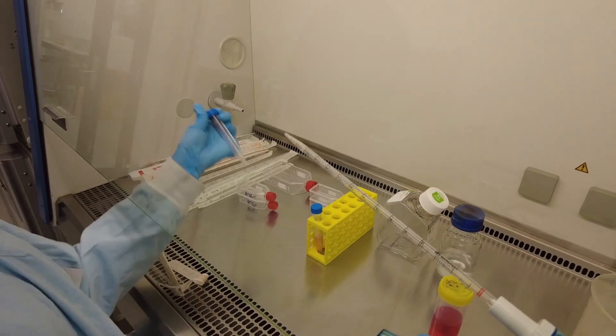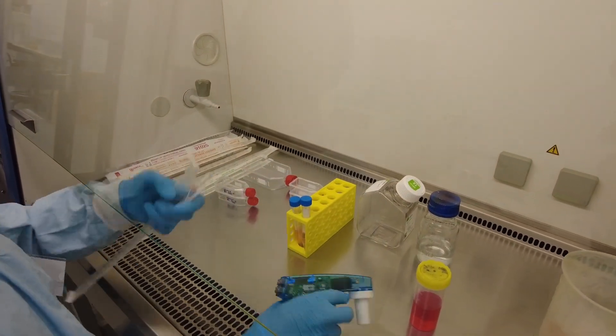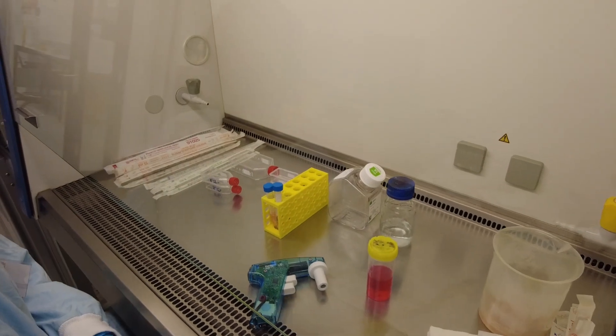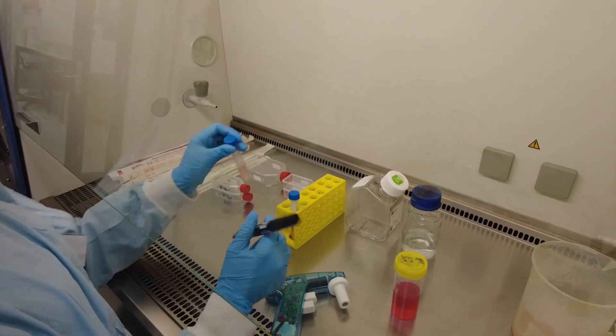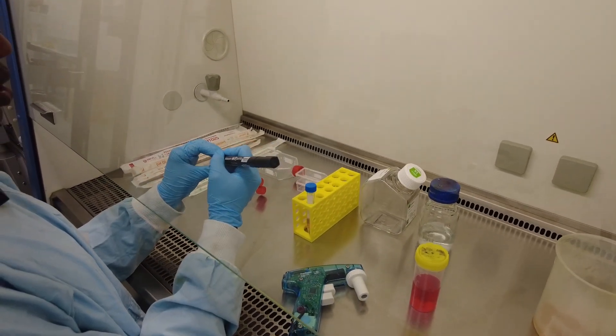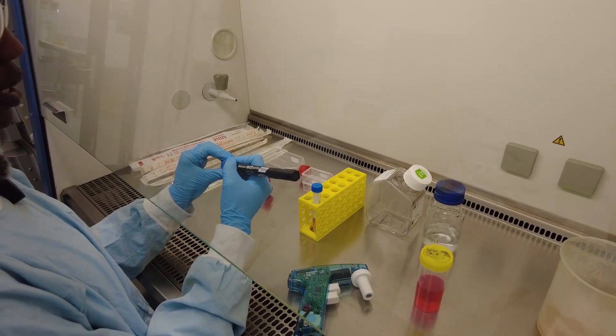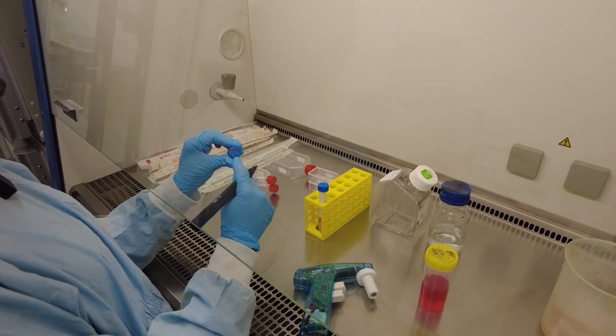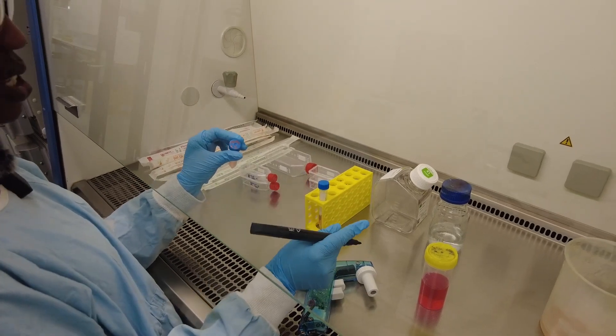We're going to label the tubes and centrifuge. So the name of these normal cells is CCD841 and they're Passage 2 which is the second time that we're splitting it and we're going to put it into Passage 3.